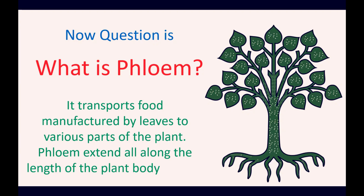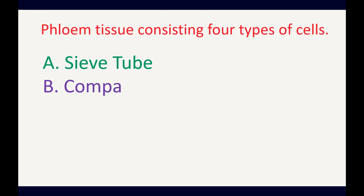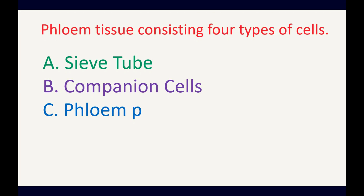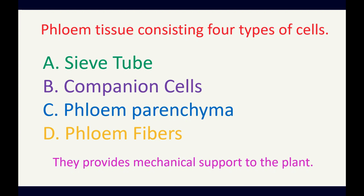Phloem tissue consists of four types of cells: (a) sieve tubes, (b) companion cells, (c) phloem parenchyma, and (d) phloem fibers. Like xylem, phloem cells also provide mechanical support or strength to the plant.